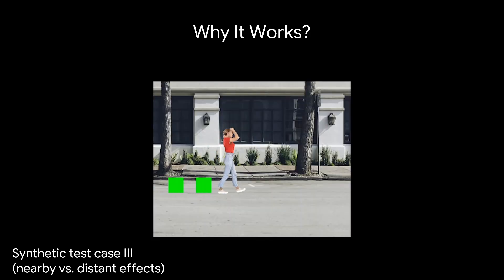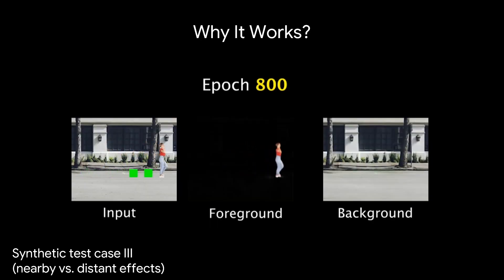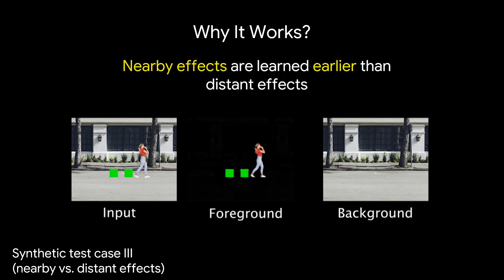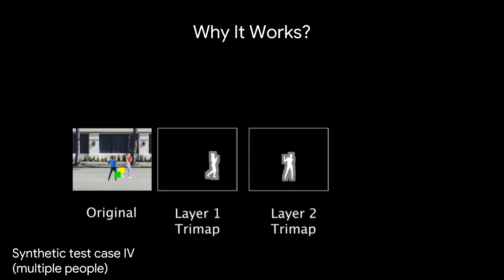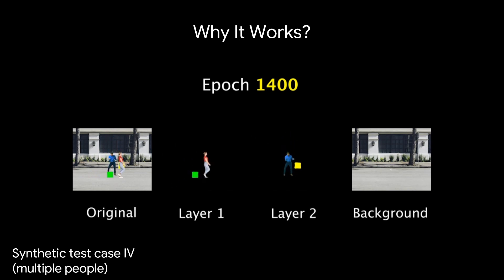When there are two people each with their own square, we assign a layer for each person using rough trimaps. Each person's layer grabs the most correlated elements in space and time, so the squares are assigned to the right layers.